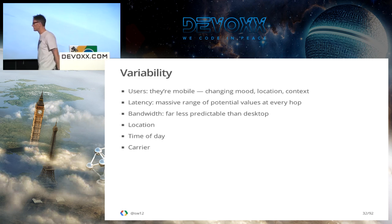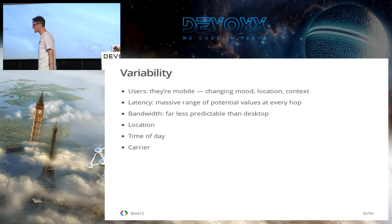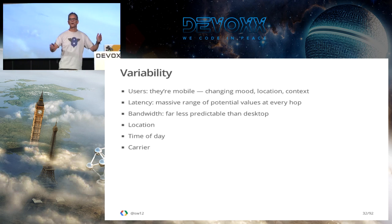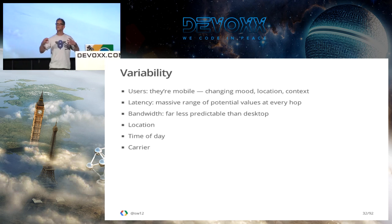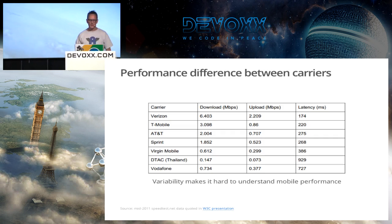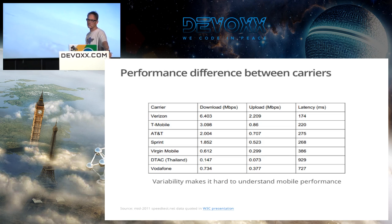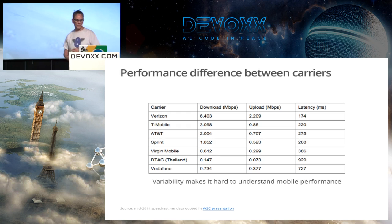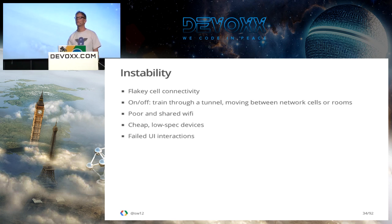We've got bandwidth that's much harder to predict on mobile — it depends on where you are in relation to within the cell, the time of day, and different carriers. Here's a recent W3C presentation — they did some tests, and basically what this shows is you've got massive variation in what they tested for performance between different carriers, making it really hard to work out what's causing the problems with performance.